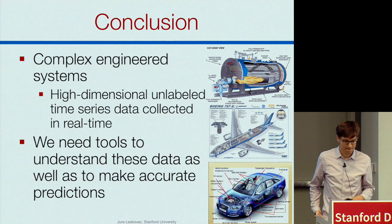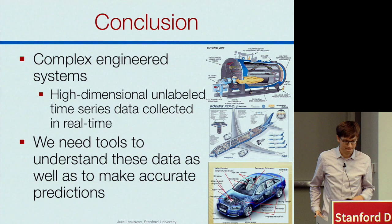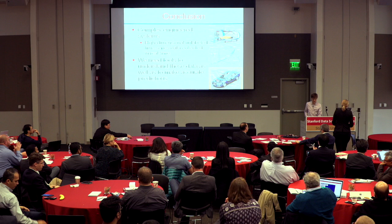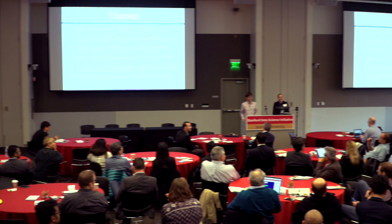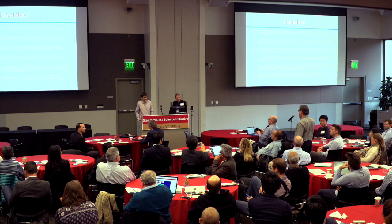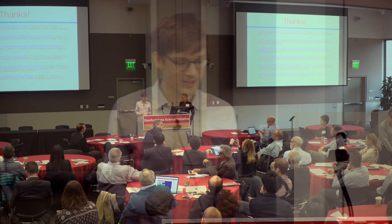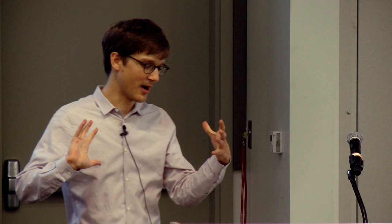Question: you showed seven sensors — it didn't look that hard. Tell us about 1,400 sensors in a car. Answer: there are ways to automatically identify the core sensors. We picked seven just because it was easy for interpretability. We could have picked more. The networks we can infer scale up to around 20,000 nodes.